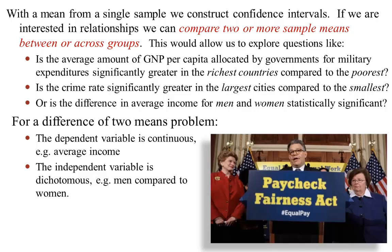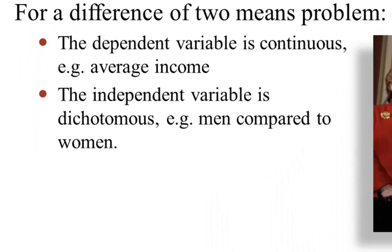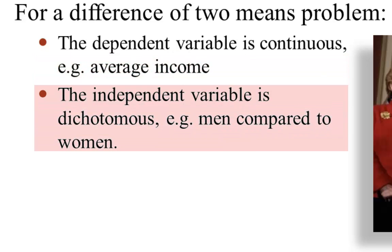We may be concerned about how crime rates differ between our smallest cities and our largest cities. The example we'll look at later is whether there's a statistically significant difference in average income when we compare across men and women. From the perspective of a measurement issue, you should always consider doing a difference of means t-test when you have two variables, your dependent variable is continuous — for example average income — and your independent variable is dichotomous.